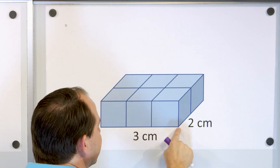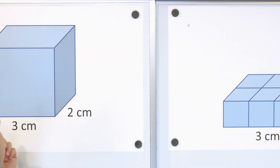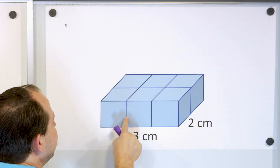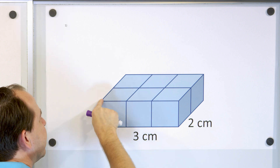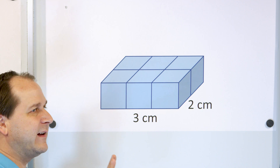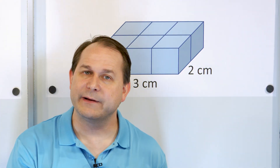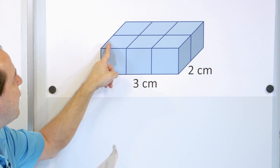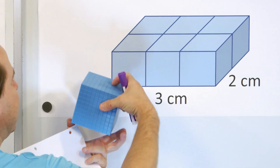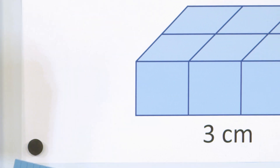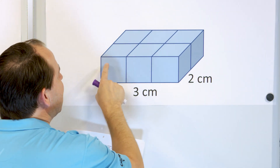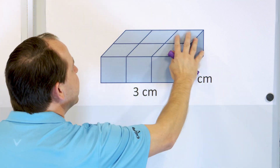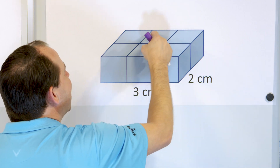If I slice everything off, notice this is still three centimeters wide and two centimeters deep — same dimensions as before, I've just cut everything away and I'm only looking at the bottom layer. I can form a cube here that is one centimeter in each direction — one centimeter deep, one centimeter in width, one centimeter in height. One of these is called a cubic centimeter, just like in my little model. So slicing the bottom layer I have six cubes — one, two, three, four, five, six cubic centimeters.